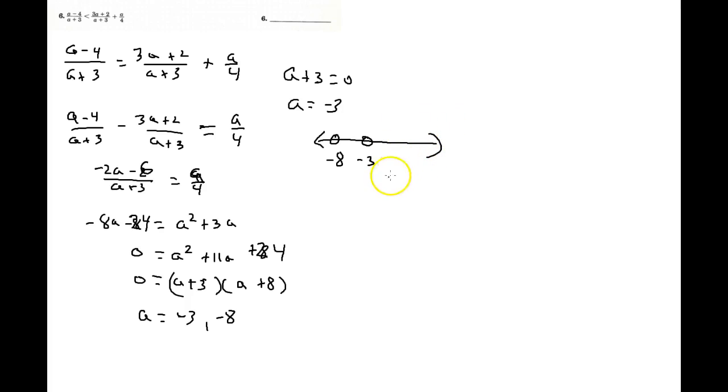So then last but not least, I need to check my three zones. I'm going to choose where a is equal to 0. If I do that, I'm going to get negative 4 over 3 is less than 2 over 3 plus 0. And that is absolutely true. So this area up here would absolutely be true, right?